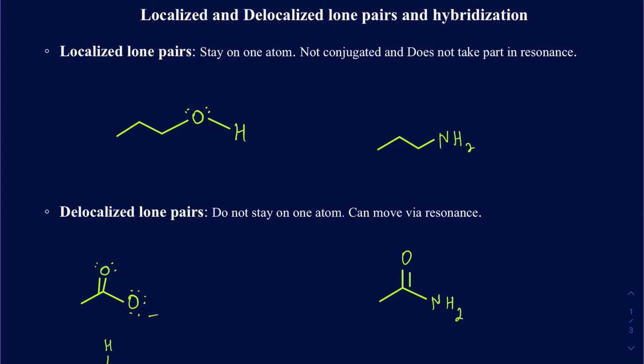Hello everyone. In this video we're going to be talking about localized and delocalized lone pairs and how to determine the hybridization on those particular elements that have localized and delocalized lone pairs. To begin with, localized lone pairs are going to be the ones that stay only on one atom. As the name specifies, they are localized, so they're going to be only on one atom — they're not going to be conjugated with the pi bonds,